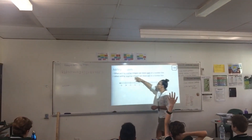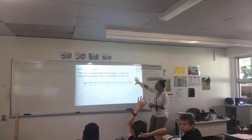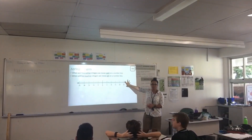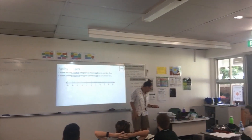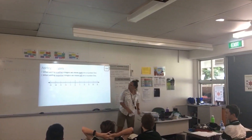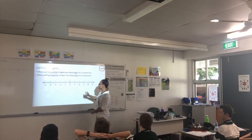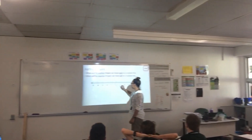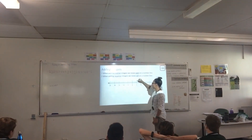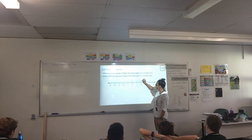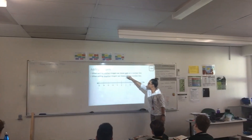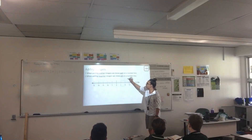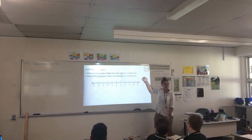So when adding positive integers, we move right — that's pretty standard. So if I think of standard issue five plus five, I move one, two, three, four, five places going right, because my numbers are getting bigger.